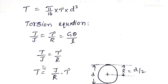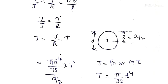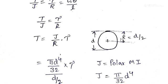Taking the first two terms, T/J = τ/r, we can write T = (J/r) × τ. For a solid shaft, the polar moment of inertia J is given by πd⁴/32. The value of r is the distance from the center to the outermost layer, which equals d/2, where d is the diameter of the shaft. This is the radius at which we find the maximum shear stress induced.